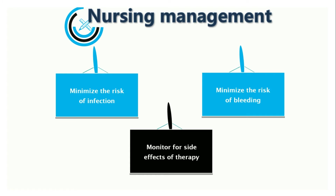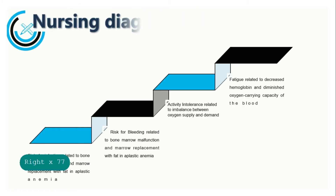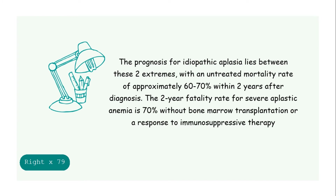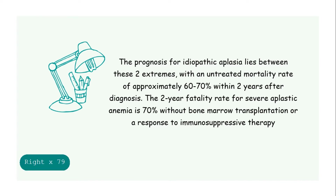They should also be informed that the metabolism of ATG is altered by many other medications, thus new prescriptions need careful assessment for drug-to-drug interaction. The prognosis for idiopathic aplasia has an untreated mortality rate of approximately 60-70% within two years after diagnosis. The two-year survival rate for severe aplastic anemia is 70% without bone marrow transplantation or adequate response to immunosuppressive therapy.